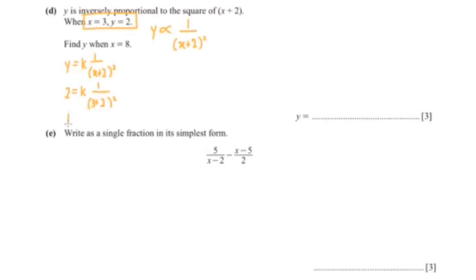So our k would be 2 multiplied with 25, which is 50. Now we have to find our y. So y equals k, which is 50, times 1 over, our x is 8.